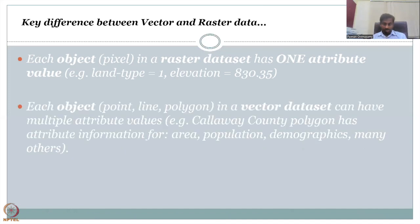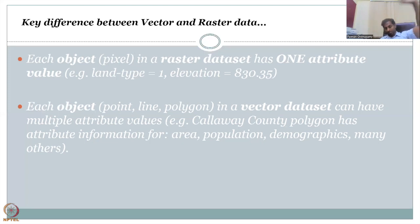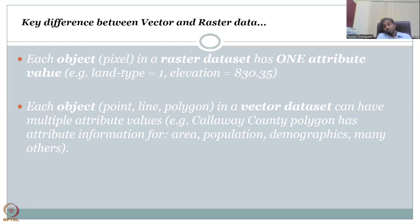However, in a vector database, each object can have multiple attribute values. For example, a county or district boundary has attribute information for area, population, demographics, and many others. You don't stop with just the district name — multiple other data are stored as sub-columns called attributes. The district name is the predominant column, and within the district you have multiple attributes that explain the data further. Be careful though — sometimes too many attributes do not explain but spoil the data. Too much data can also introduce errors.